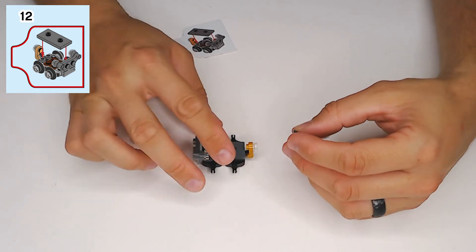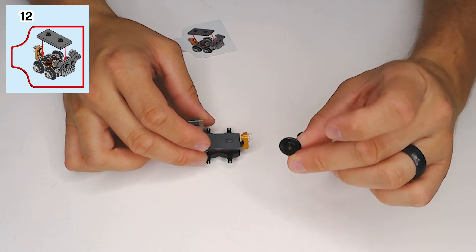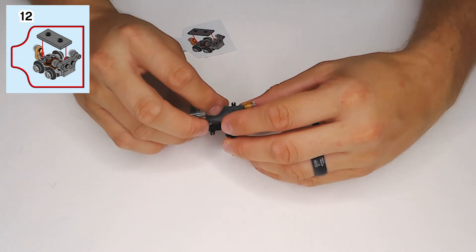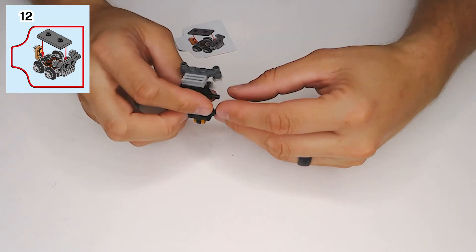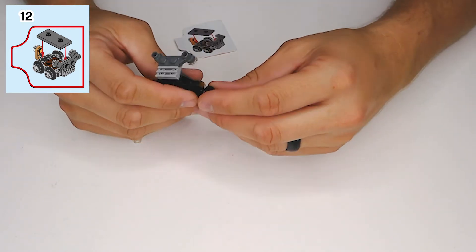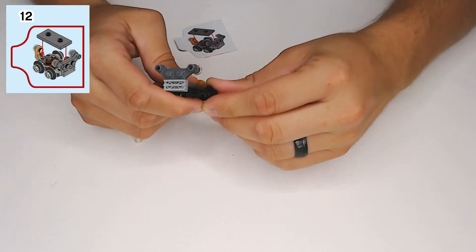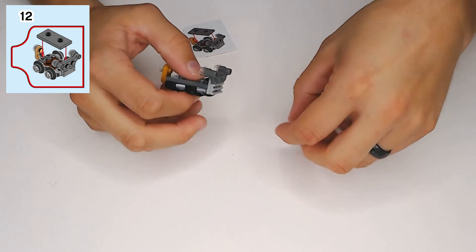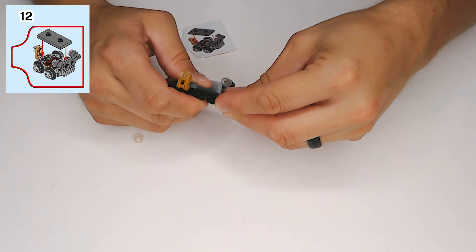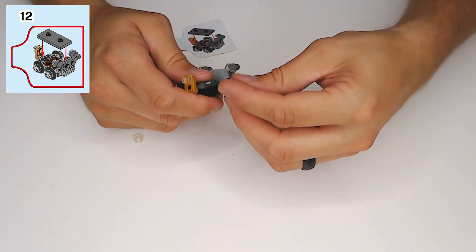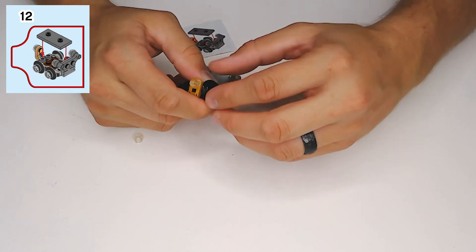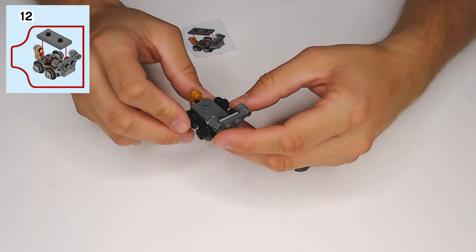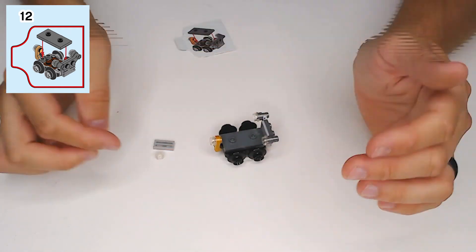And then all we have left to do is get offset wheels, and clip them into the axle. Okay. Alright, so that's Gringotts' little minecart, and we have two extra pieces there.